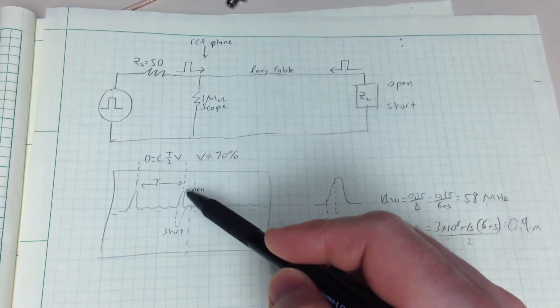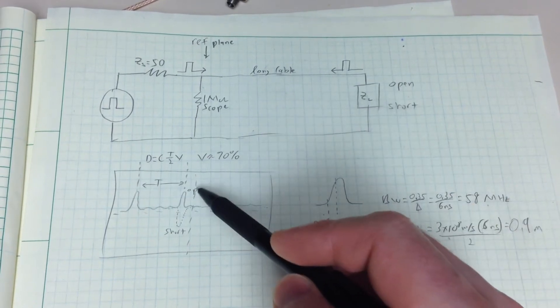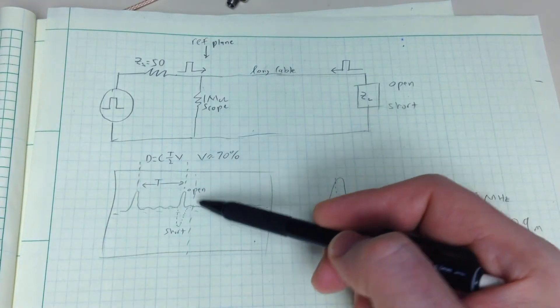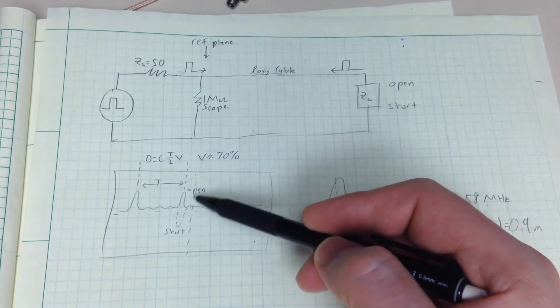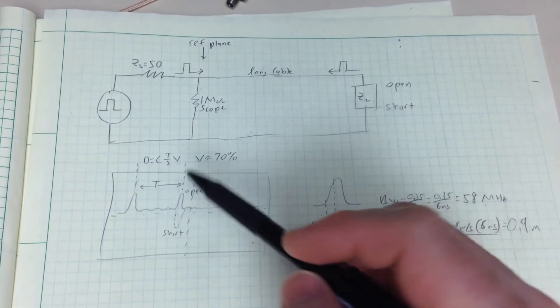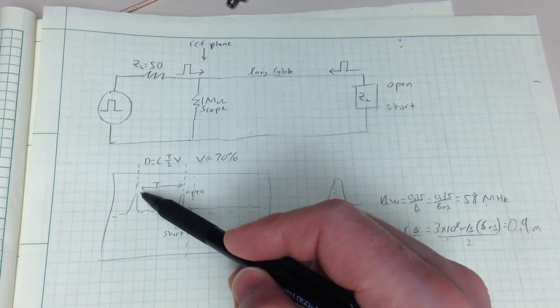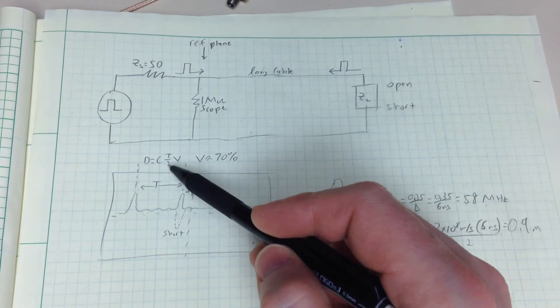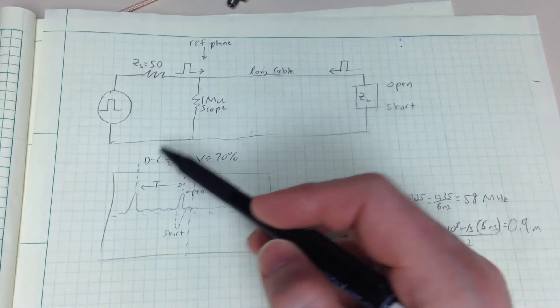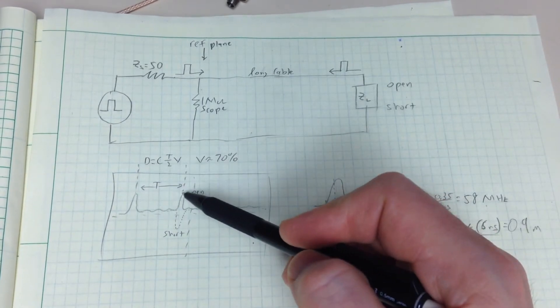And this return pulse can either have a positive amplitude if the discontinuity over here is an open or it's going to have a negative one if it's a short circuit. If you measure the time between the first pulse and the second pulse and you divide that by two since it's a two-way trip down the cable and back, multiply that by the speed of light, you can find the distance from the beginning of the cable to where the reflection occurred.